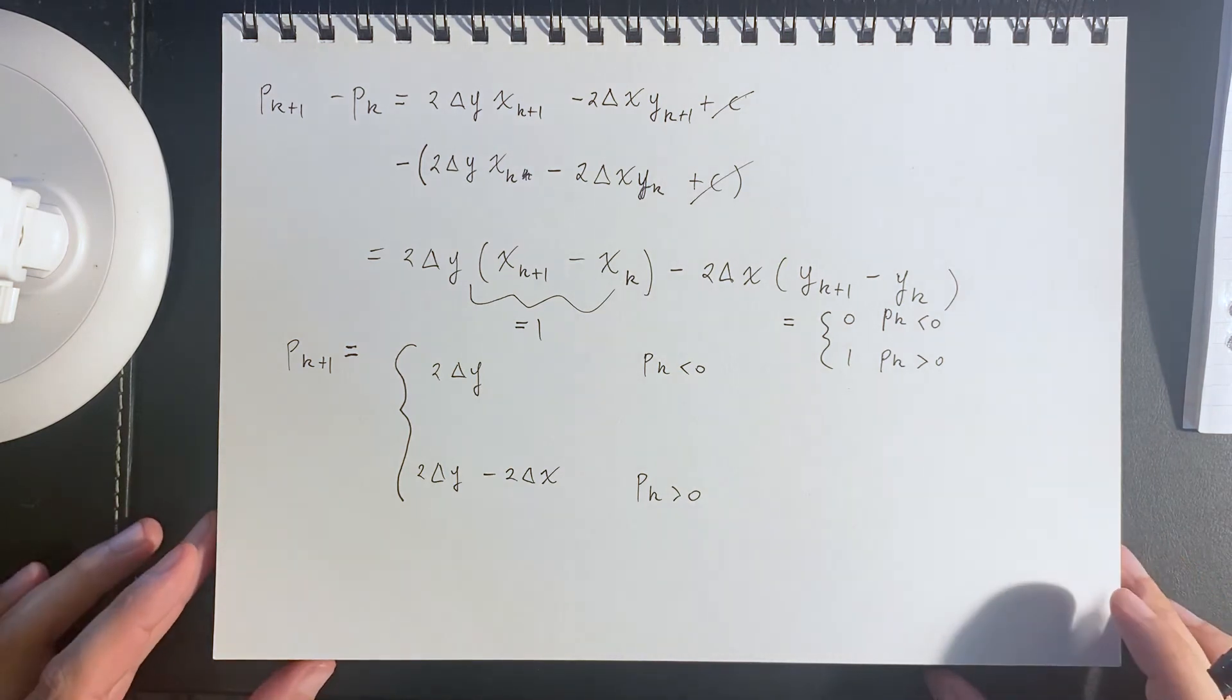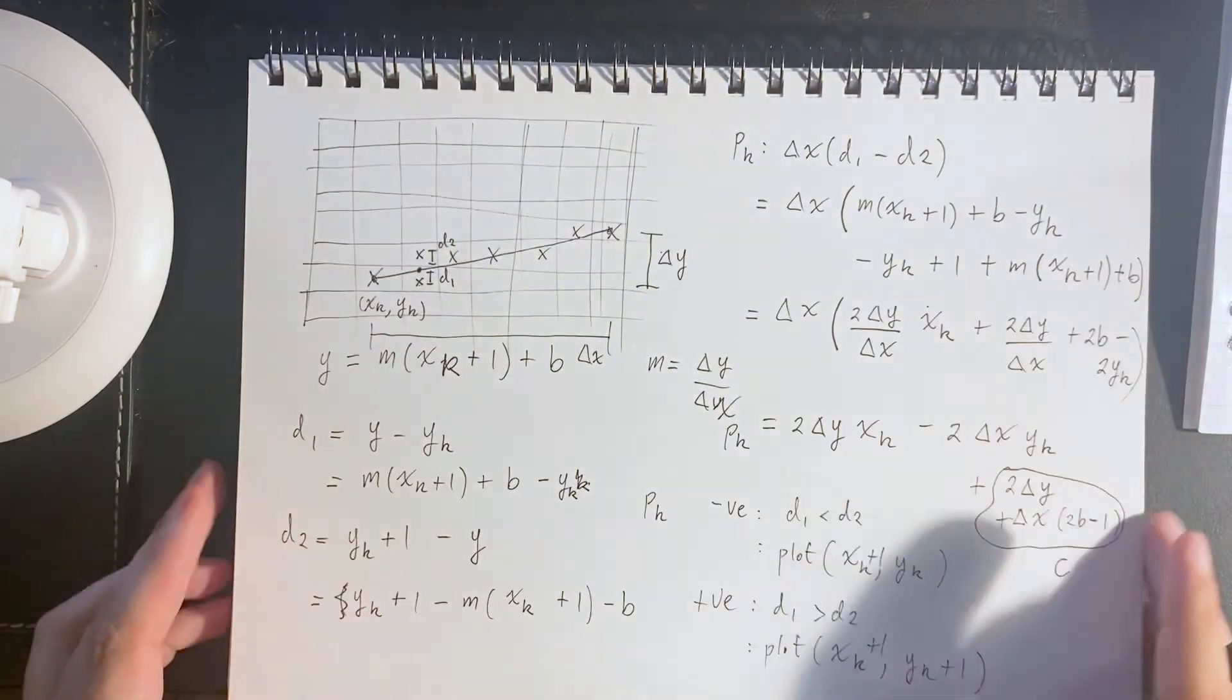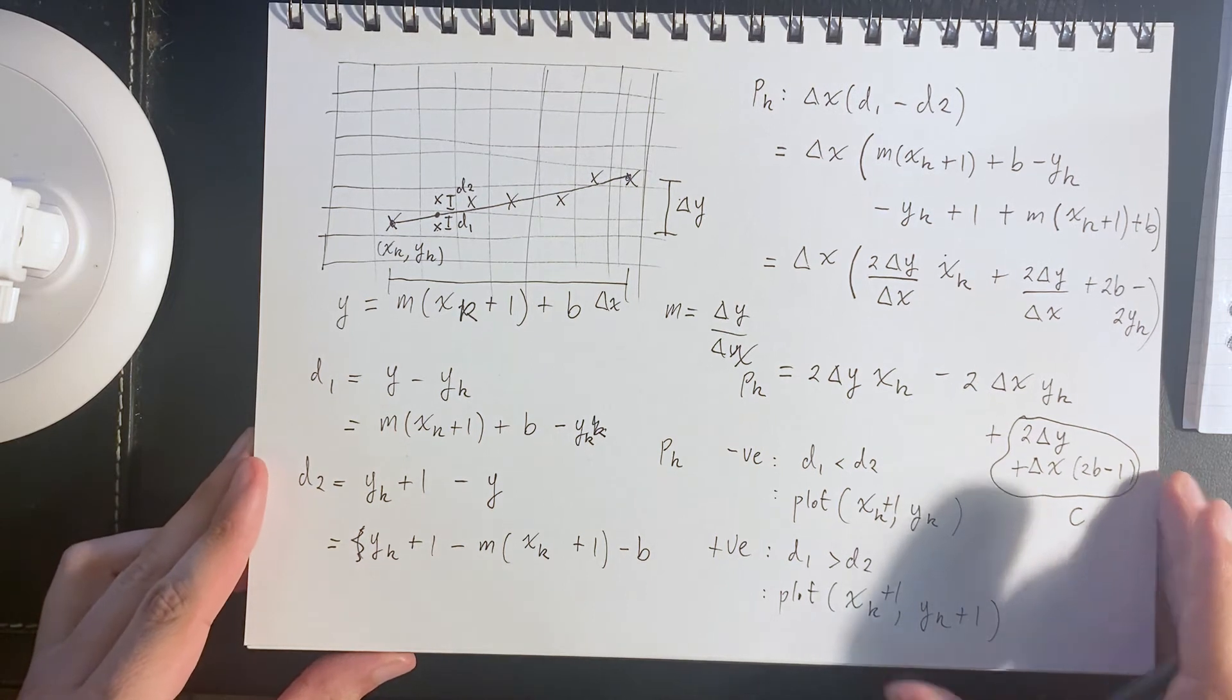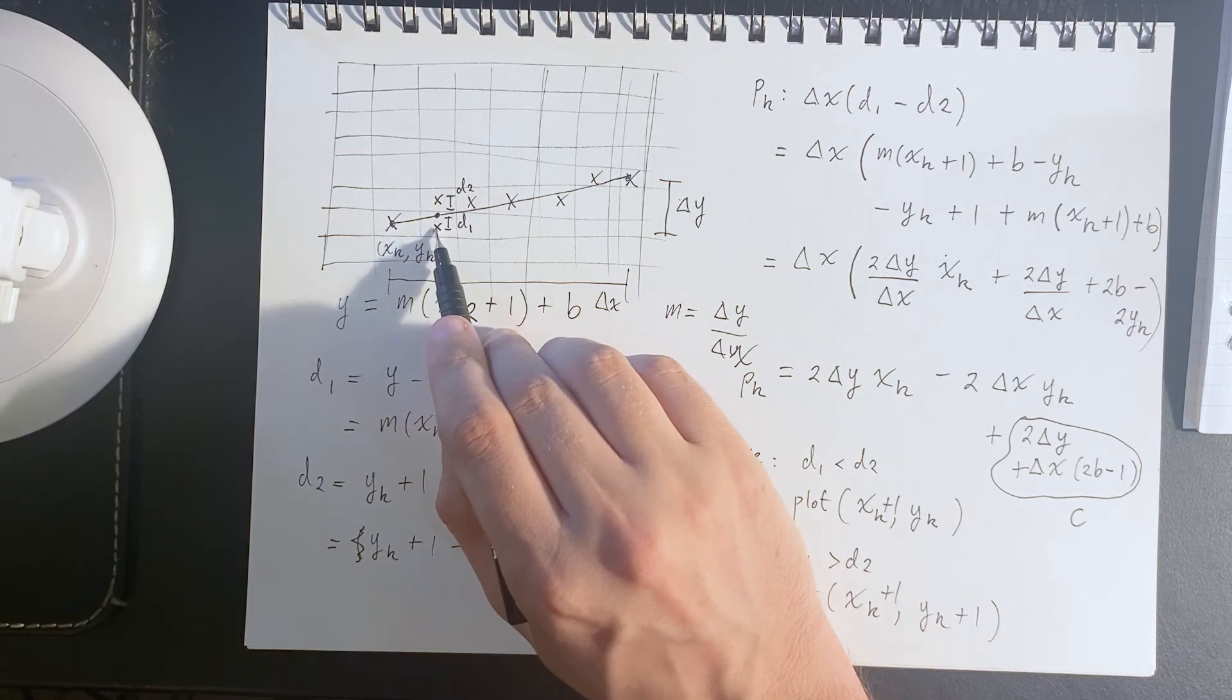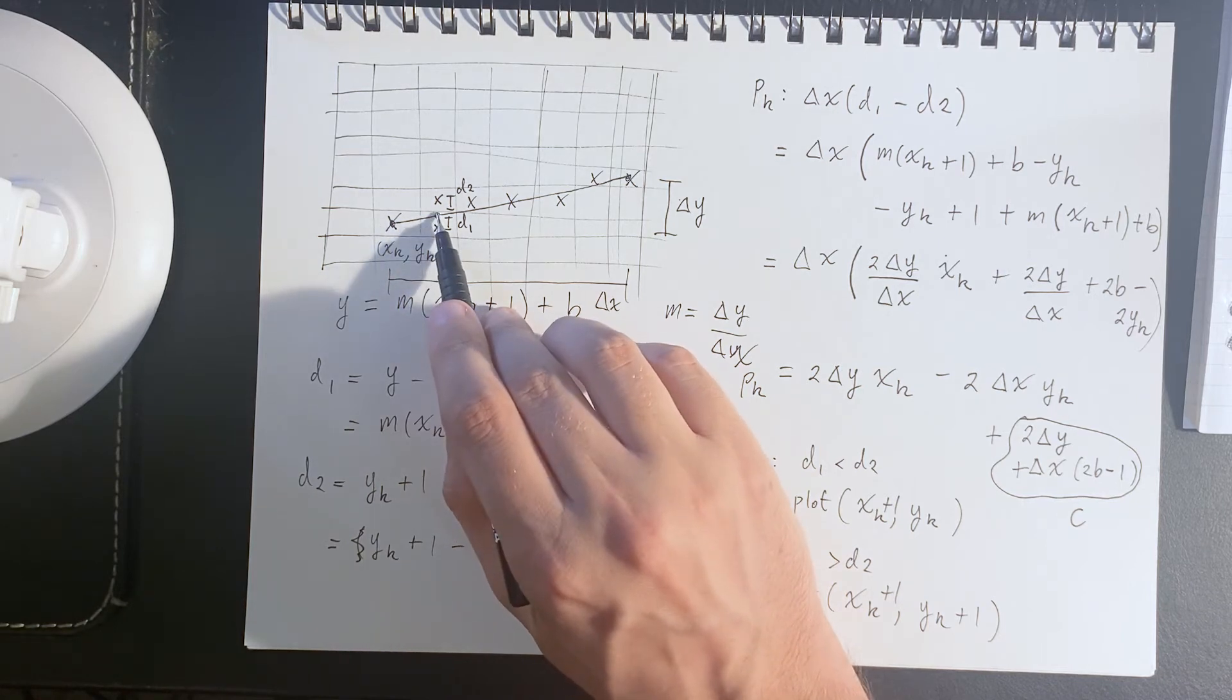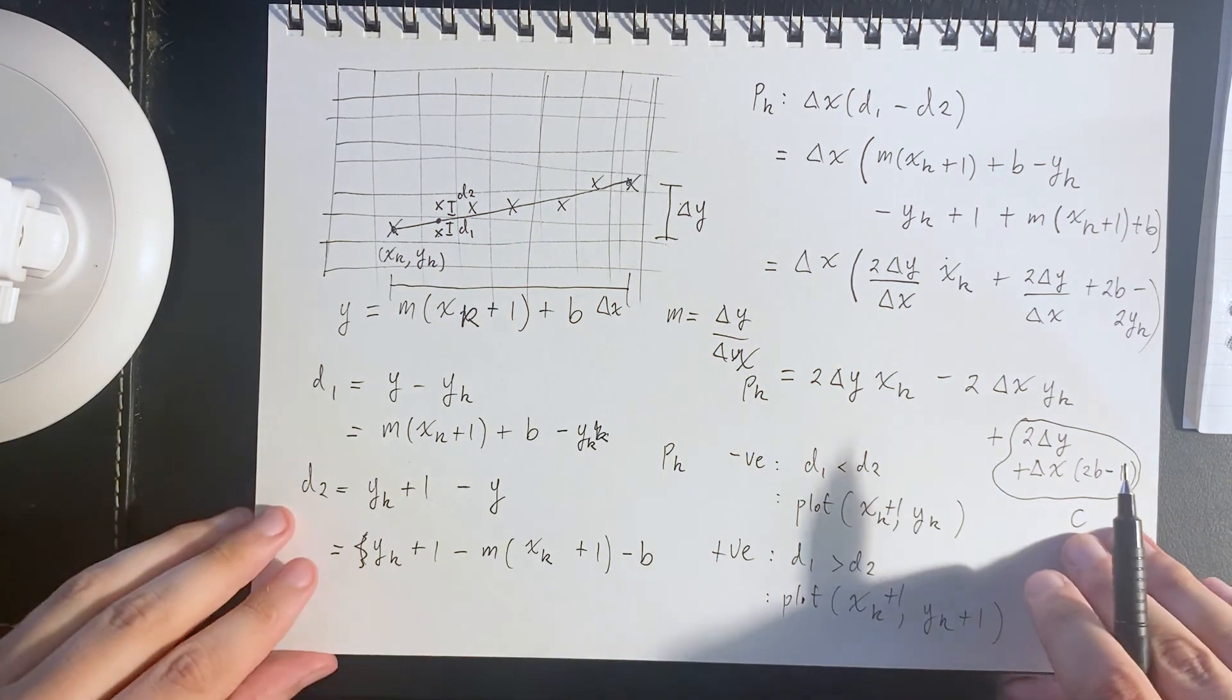Well, one thing we can do is we can say for our starting point, we will just look at the difference of midpoints. We'll step x across by one, step y up by one half, and then compare those distances.